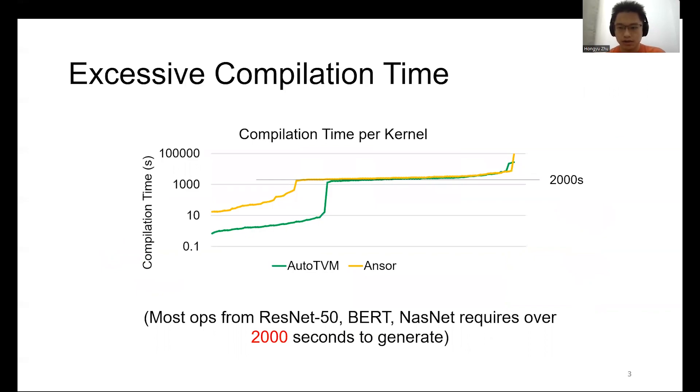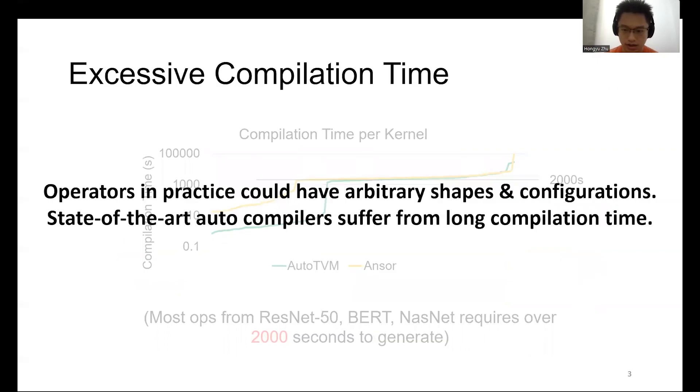However, such AutoTensor compilers are often hard to use. One of the reasons is the excessive compilation time. We tried to use AutoTVM and Ansor to generate the kernels from ResNet, BERT, and NASNet models. As we can see, most operators require over 2,000 seconds to generate the kernel functions. Practically, there are various kinds of training and inference tasks, and the operators used could have arbitrary shapes and configurations. The long compilation time will make AutoTensor compilers almost infeasible for practical use.